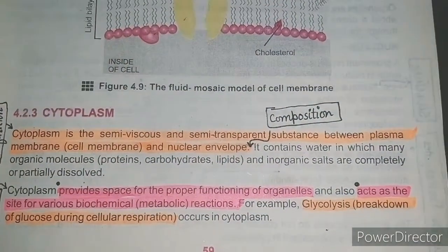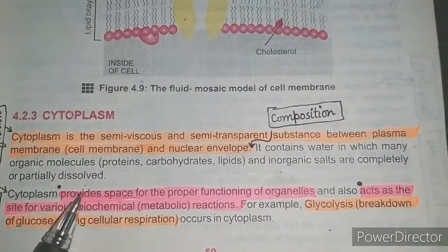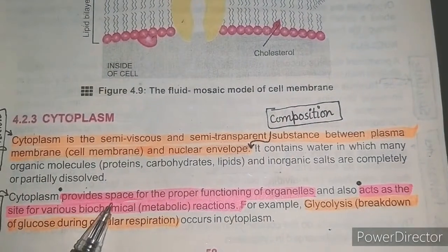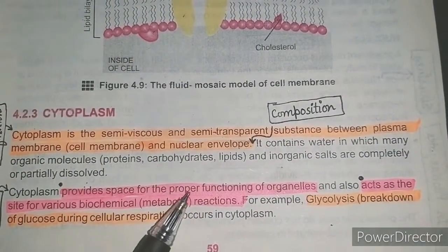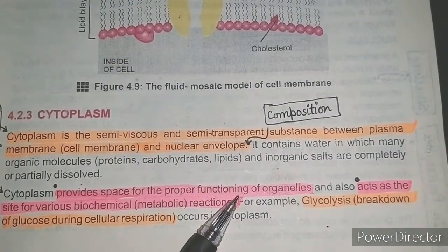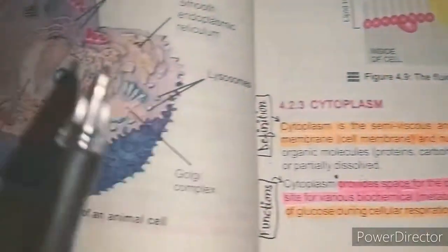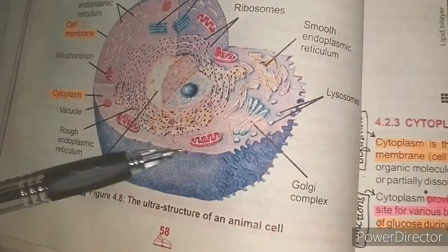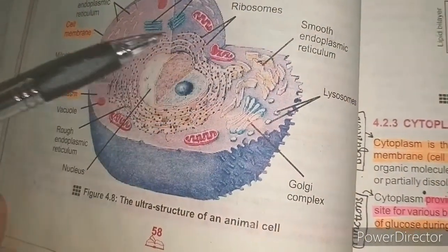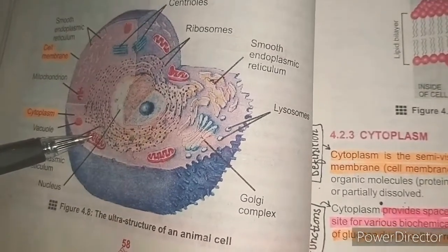The first function of cytoplasm is that it provides space for the proper functioning of different organelles. Since organelles are present in the cytoplasm, this space allows all organelles to function properly.